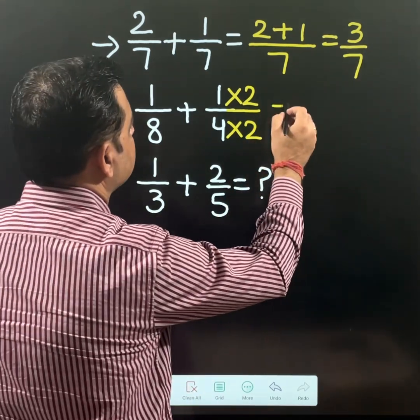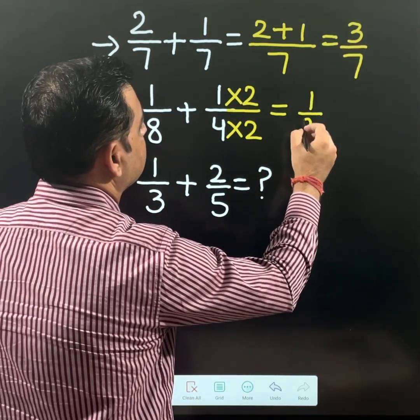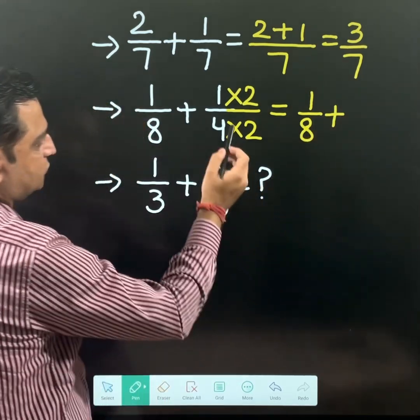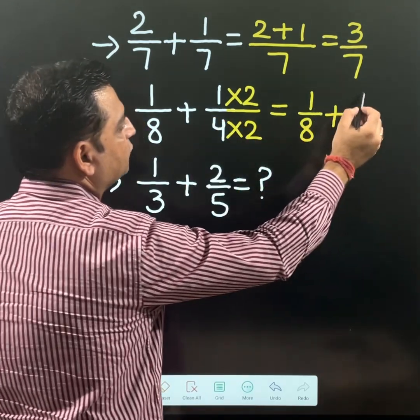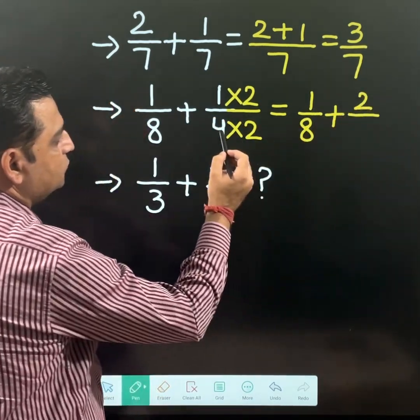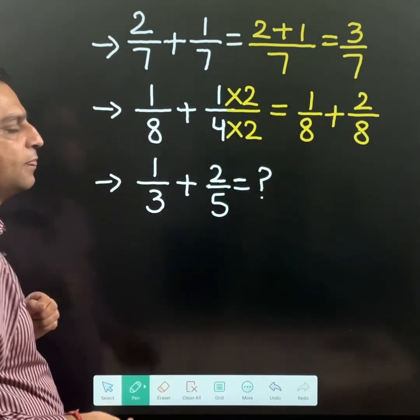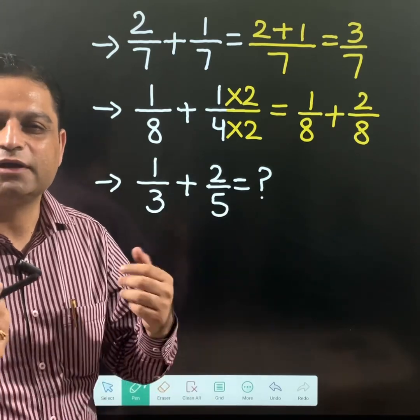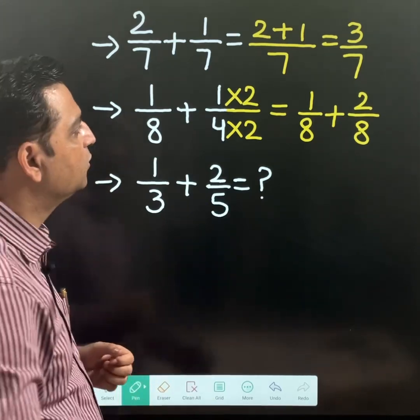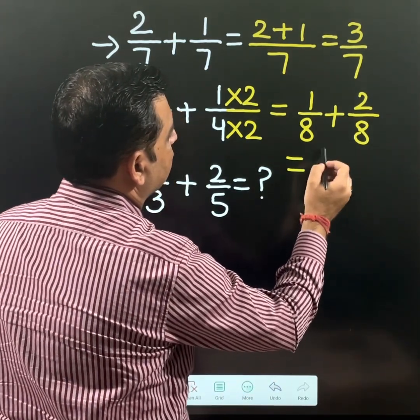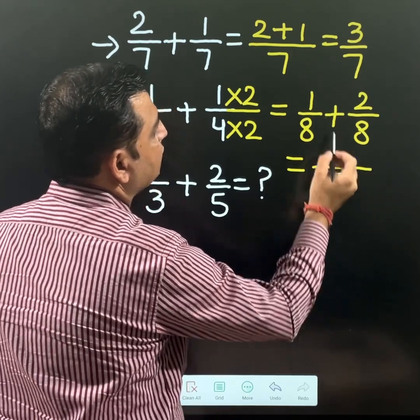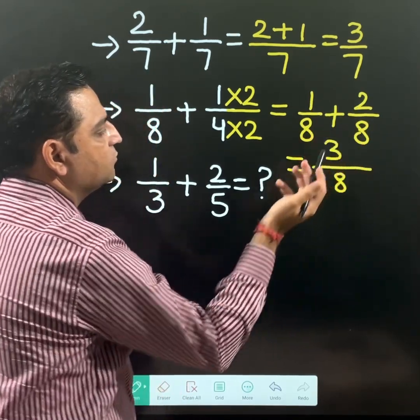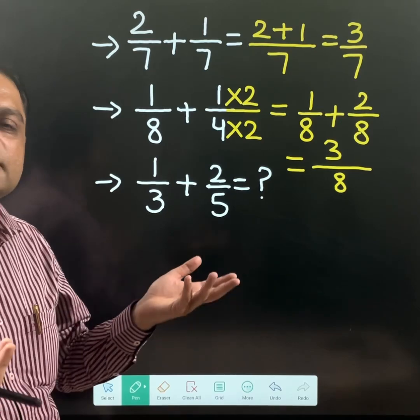And what will I get? It will become 1 over 8 plus 1 multiplied by 2 is 2, 4 multiplied by 2 is 8. If we are done with this step, then the question becomes very easy. The denominator is 8, 1 plus 2 is 3. That means the final answer is 3 over 8. So do remember, if the denominator is not the same, just make it the same.